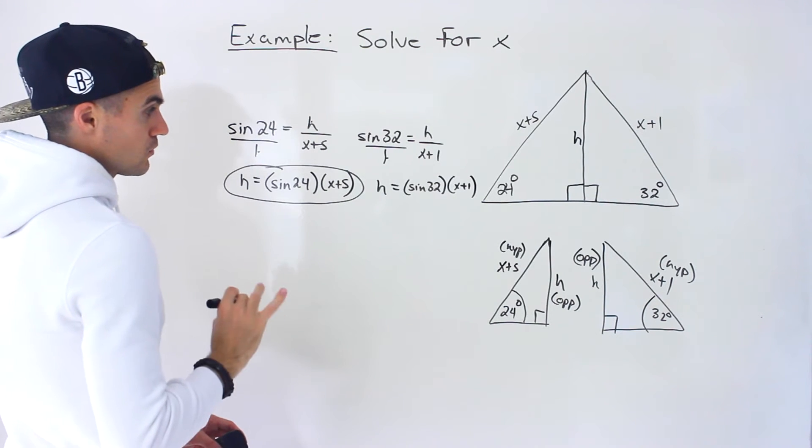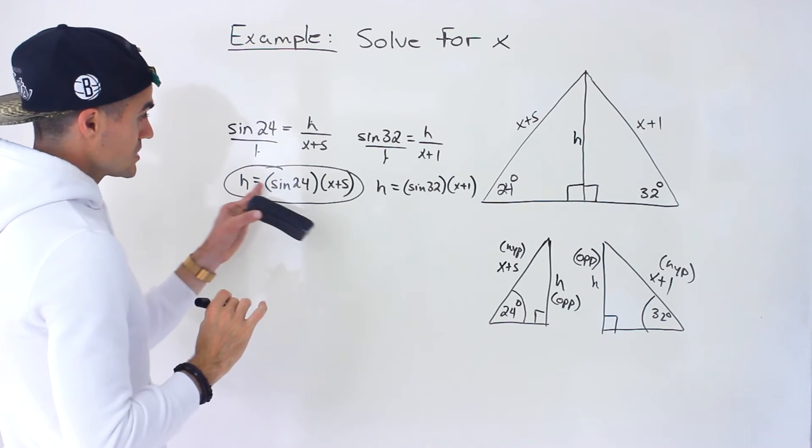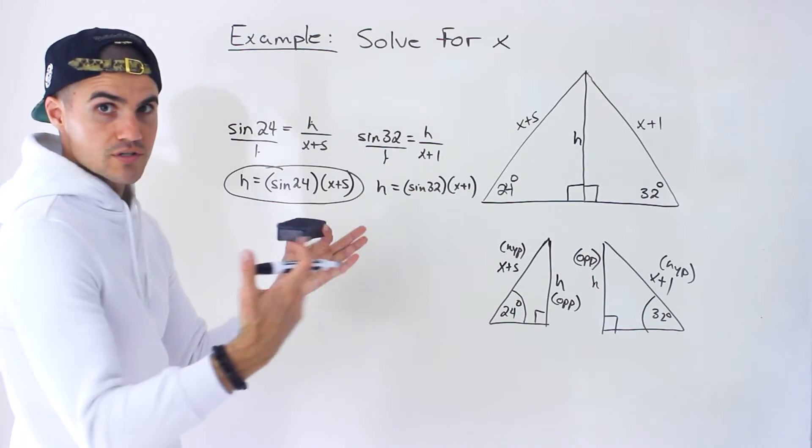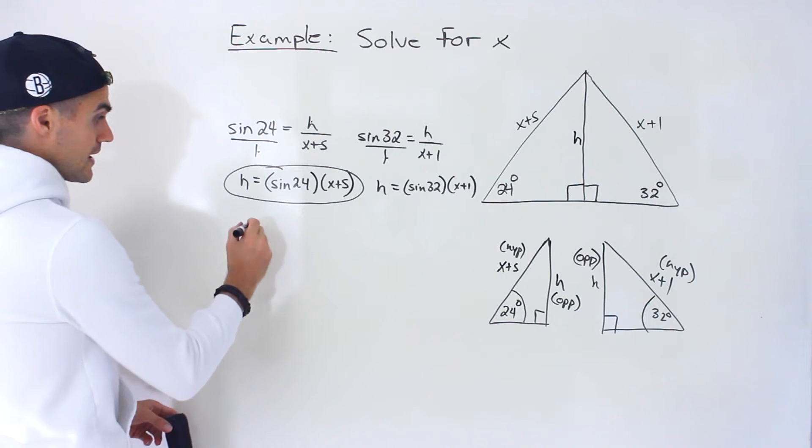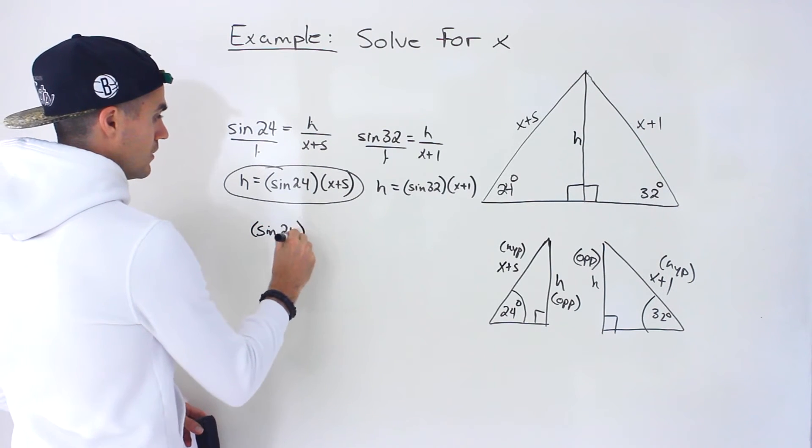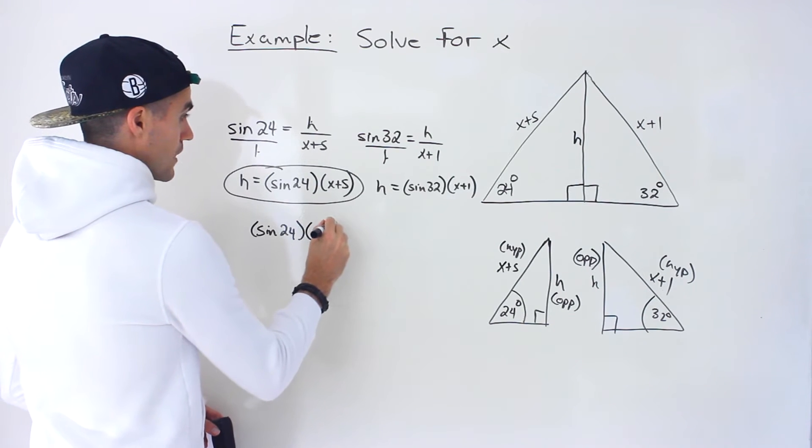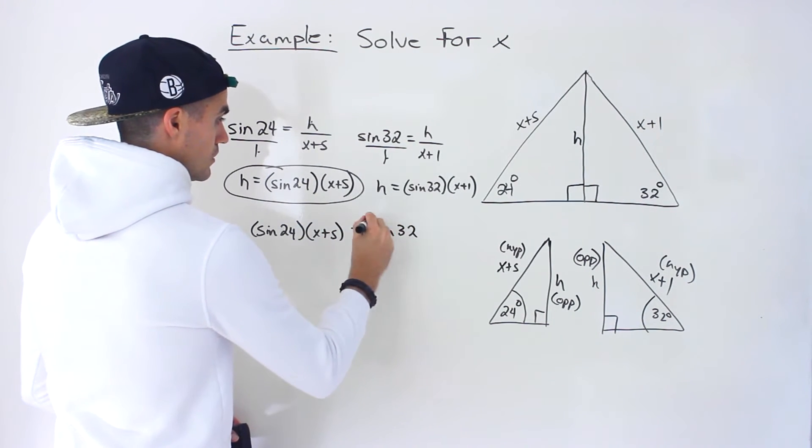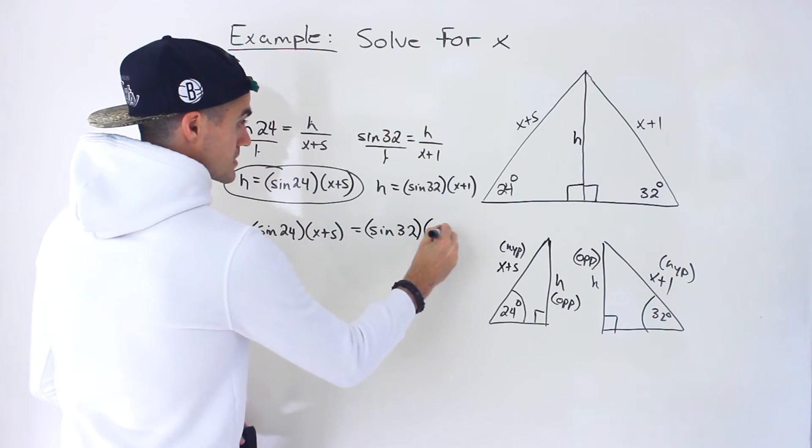From here, what we can do is now h equals this, h is also equal to that. So we can make both of those equal because both of them are going to equal h. So we can say sine of 24 bracket x plus 5 is equal to sine of 32 bracket x plus 1.